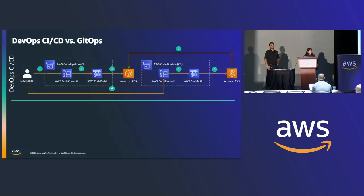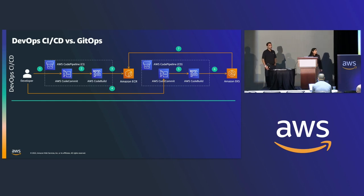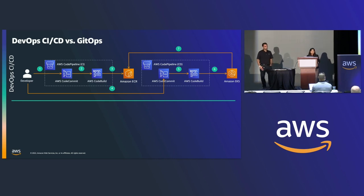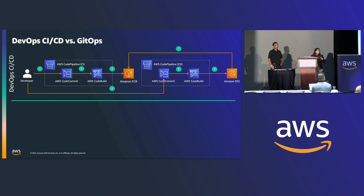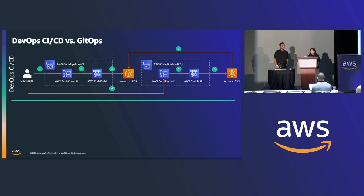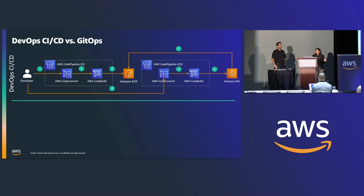What is GitOps, and how does it differentiate from traditional DevOps? Traditionally, we have used CI pipelines. The CI pipelines watch for changes in the code that developers commit. They execute the build process, create images, and release these images to container registries. There is a separate CD process which watches for Kubernetes manifest changes to reflect these image versions.